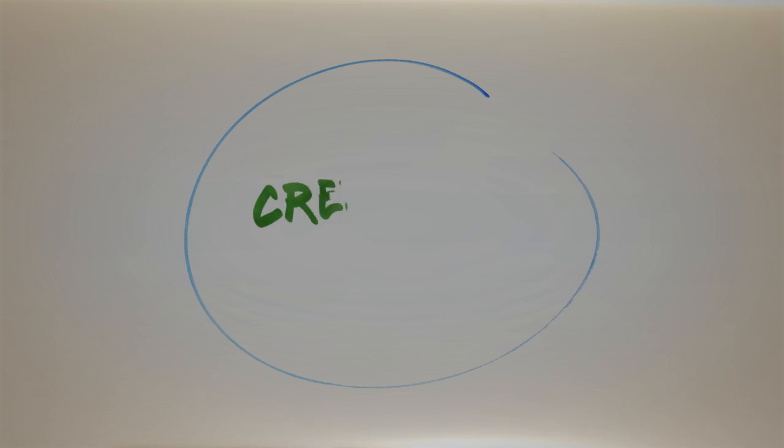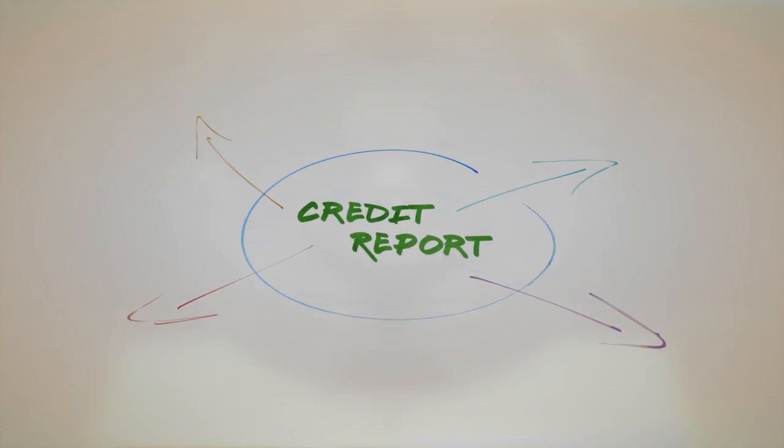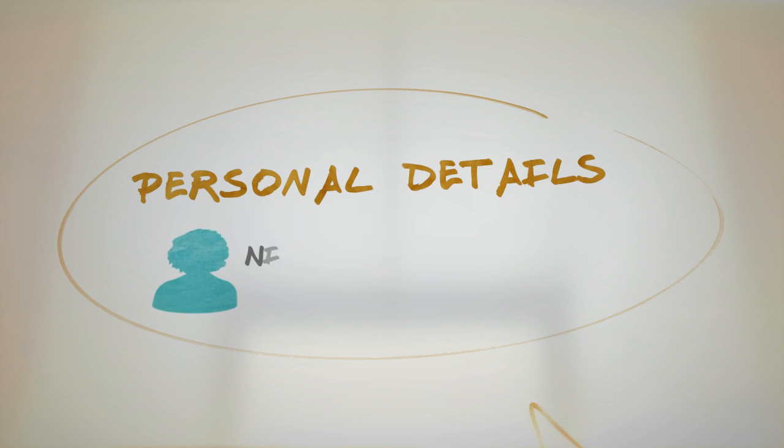So what information is on the credit report? There are different sections on the credit report. The first one is your personal details which carries information about your name, your surname, address and contact detail. Make sure those are correct.